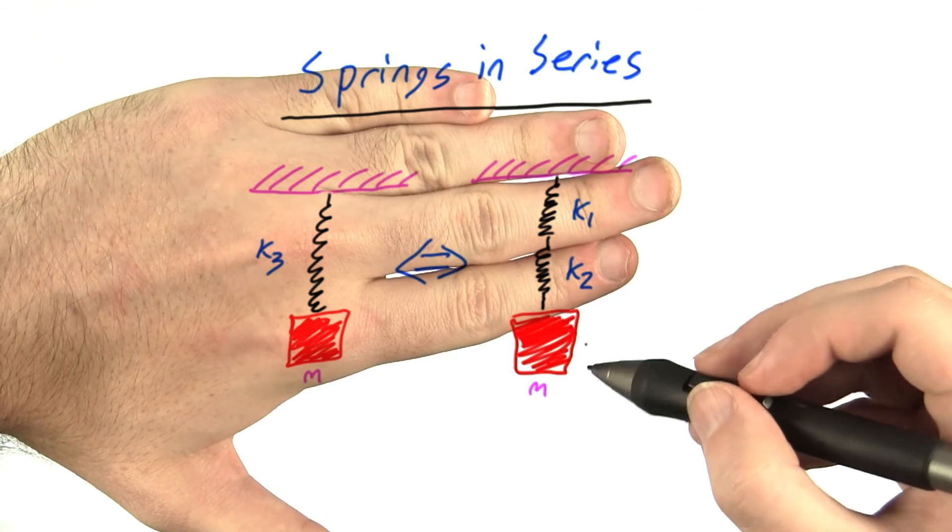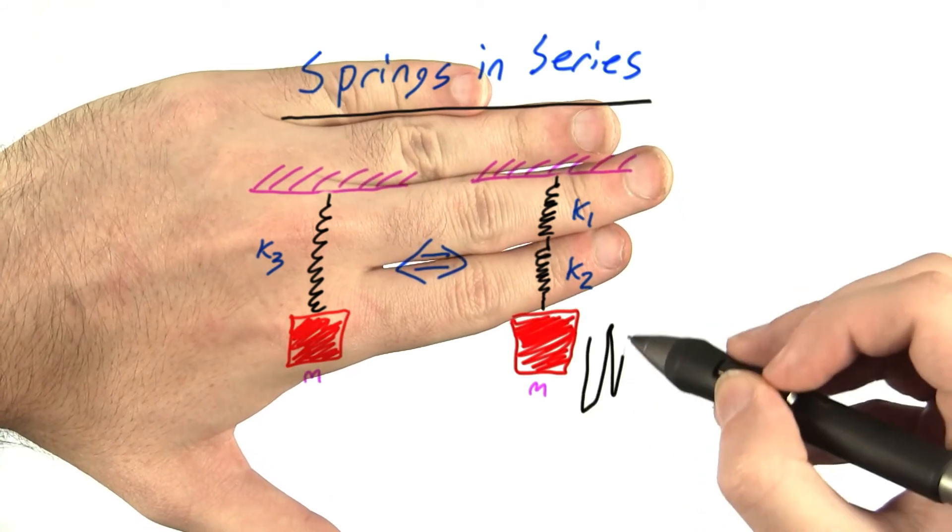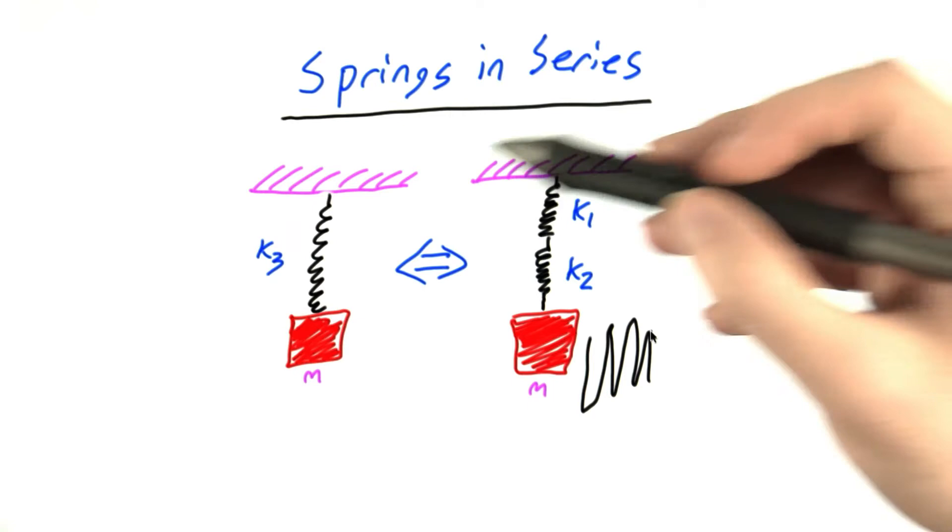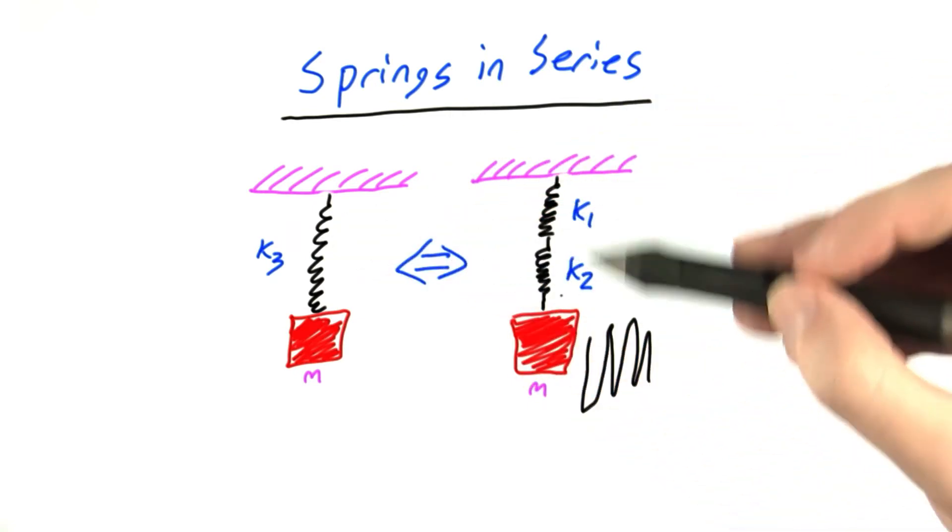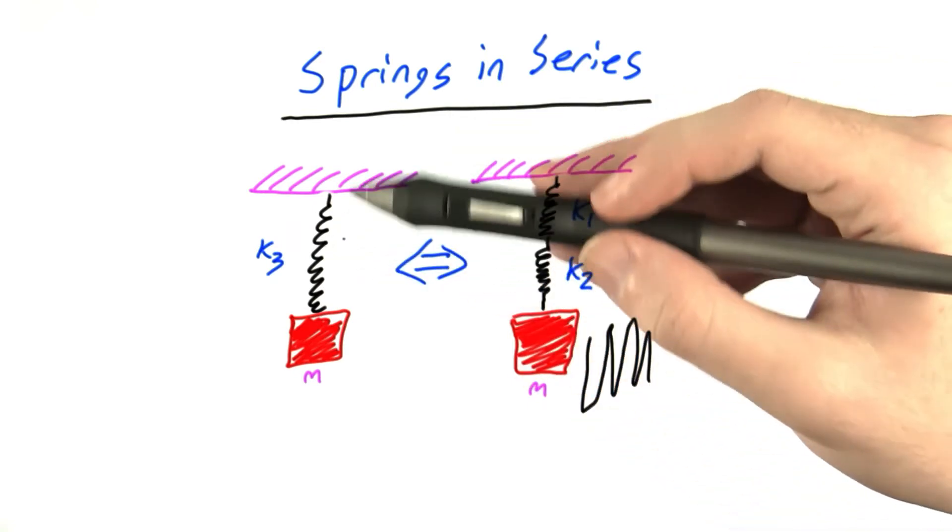If I covered up the springs and you just watched the block oscillating up and down, you wouldn't actually be able to tell the difference between these two cases, the case where there are two springs connected and the case where there's just one.